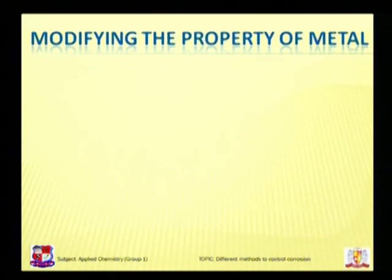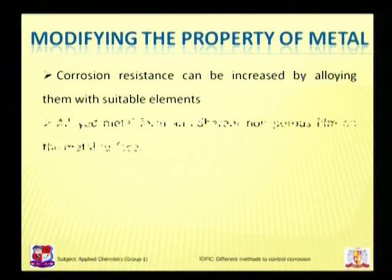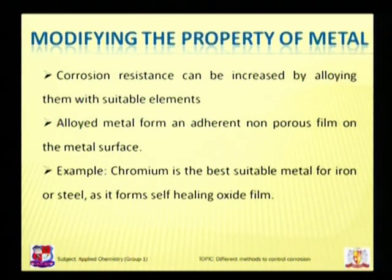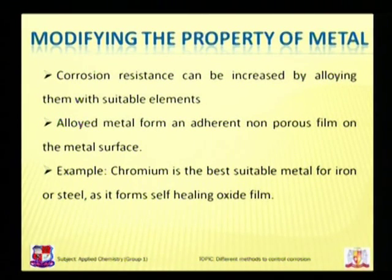Another way to prevent corrosion is by modifying the property of the metal. Corrosion resistance can be increased by alloying the metal with suitable elements — the alloyed metal forms an adherent, non-porous film on the metal surface. For example, in steel, chromium is the best suitable element and acts as a corrosion-resistant agent for iron and steel because it forms a self-healing oxide film. If there is any crack or pore, chromium acts as a self-healing oxide — it reacts with oxygen or atmospheric moisture and again forms an oxide film which acts as a protective barrier on the surface of iron or steel.